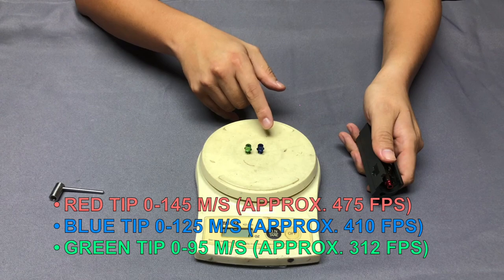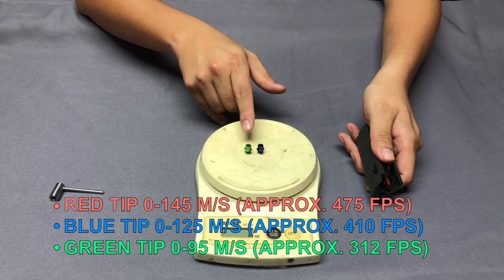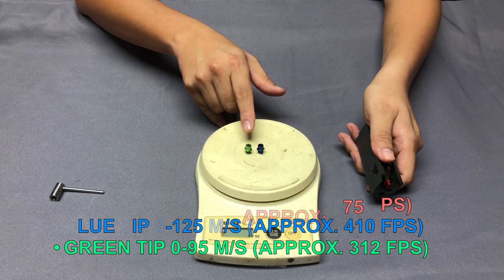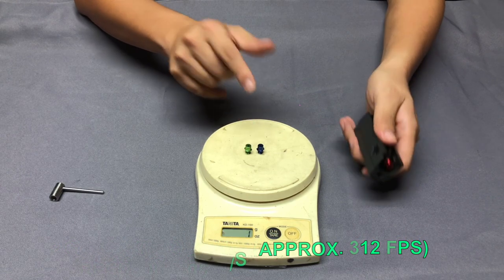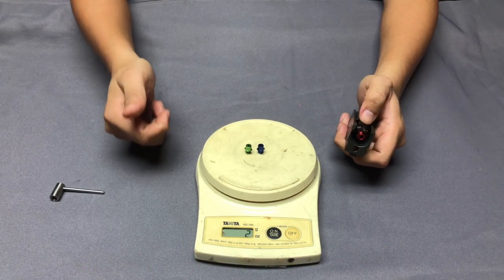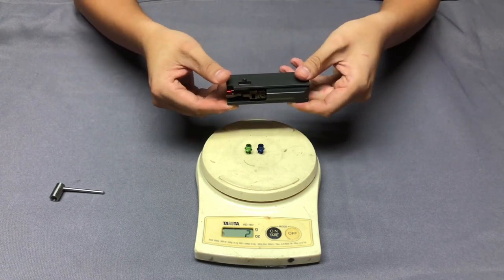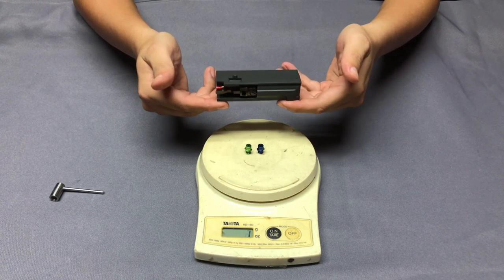And also if you want to use the green one, they will turn down the FPS even more lower. It will be able to adjust the MPS from 0 to 95, which means the FPS will go to 312. It's up to you, just depends on your wargame rules. So it's a good deal. You can buy this set and fit for different rules in the wargame.